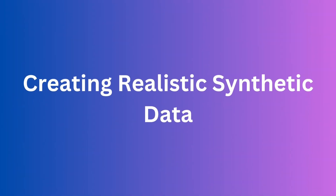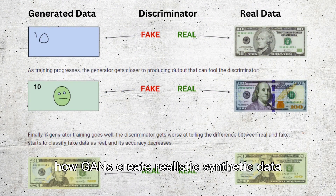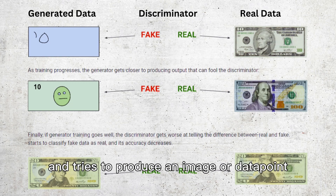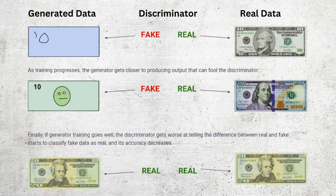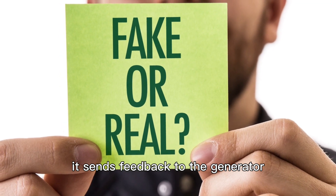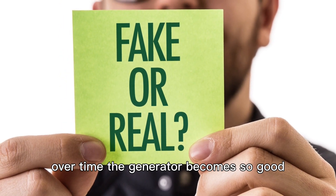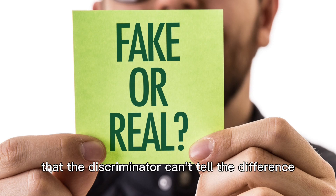Creating realistic synthetic data. Let's get to the heart of the matter — how GANs create realistic synthetic data. The generator starts with random noise and tries to produce an image or data point. The discriminator evaluates this generated data, and if it spots something fake, it sends feedback to the generator. Over time, the generator becomes so good at creating realistic data that the discriminator can't tell the difference.